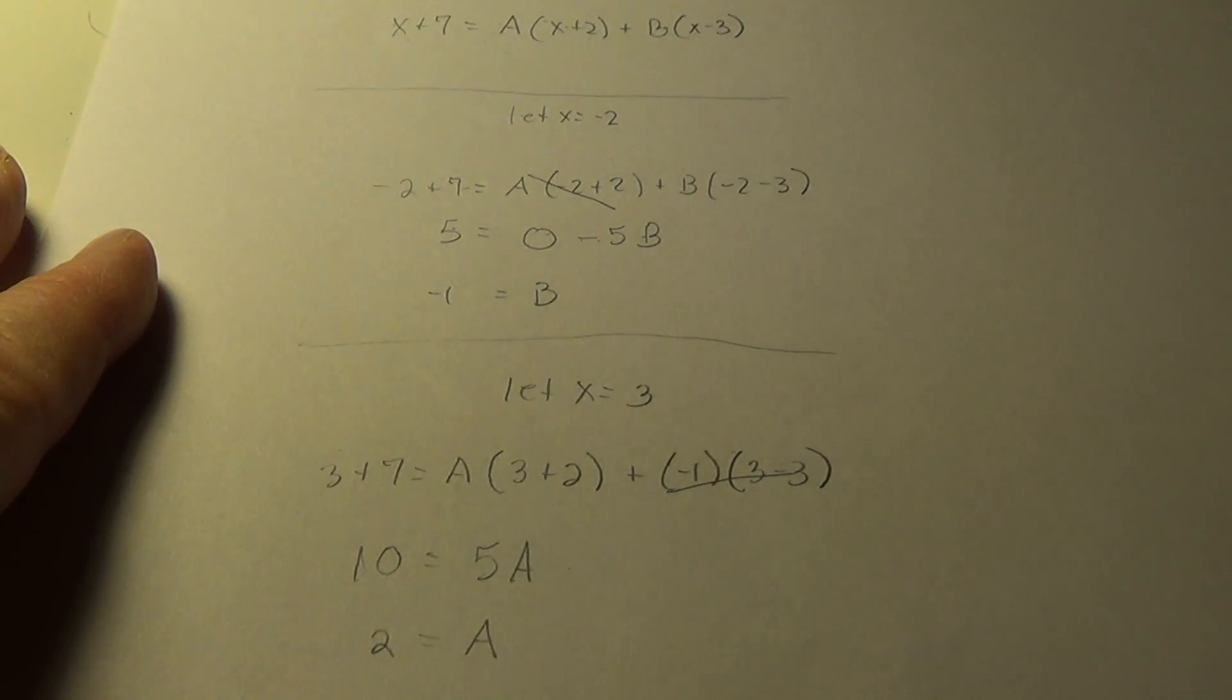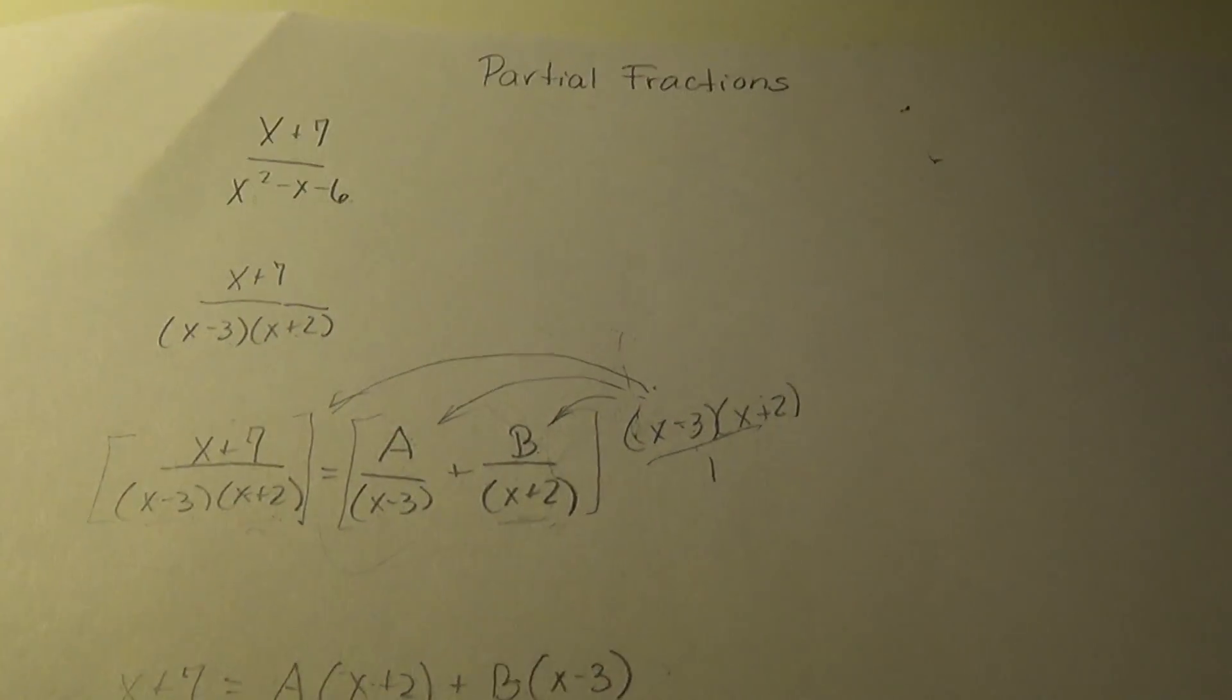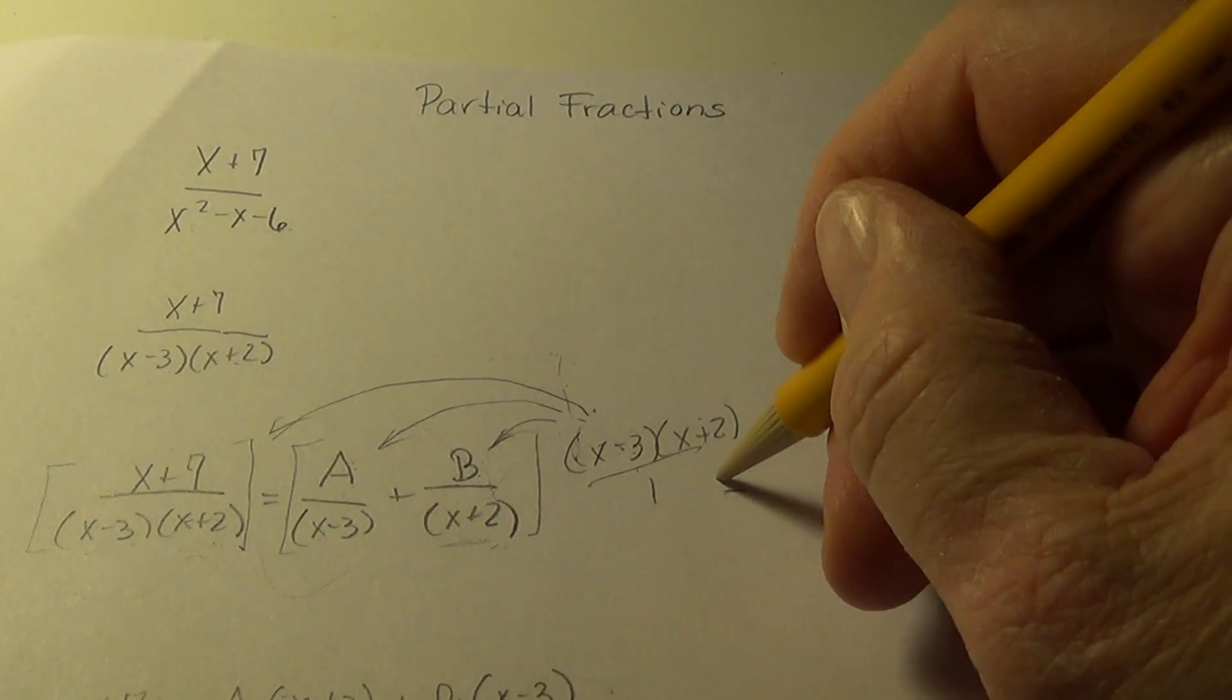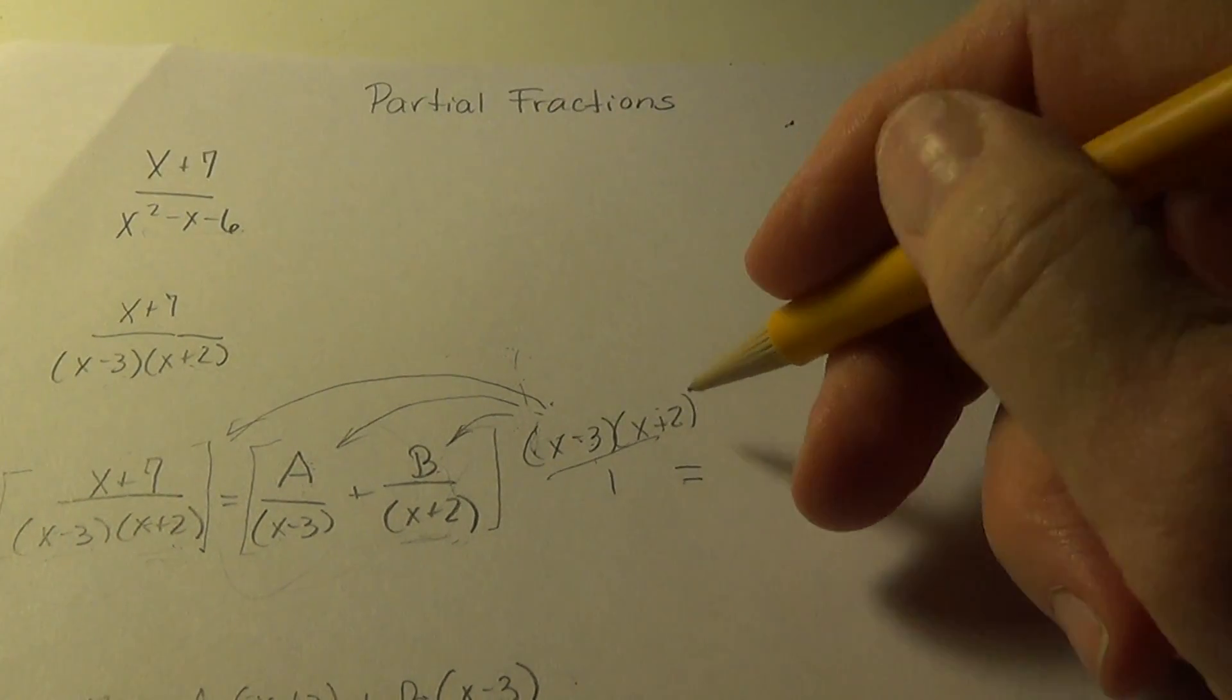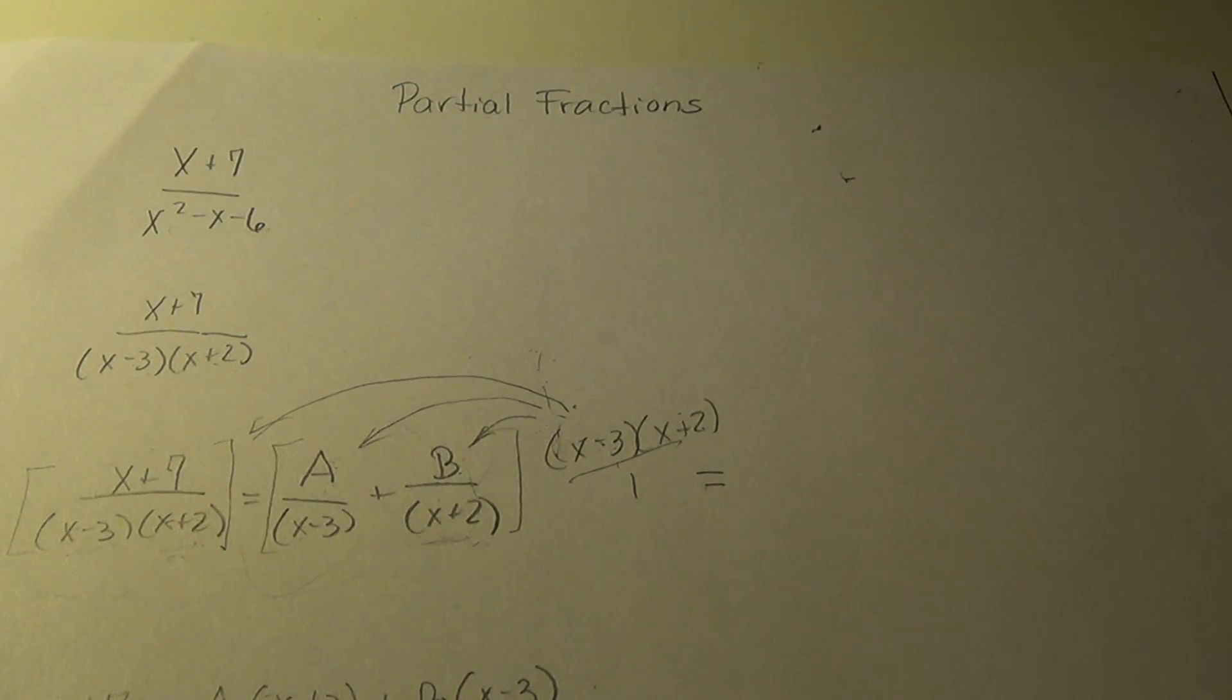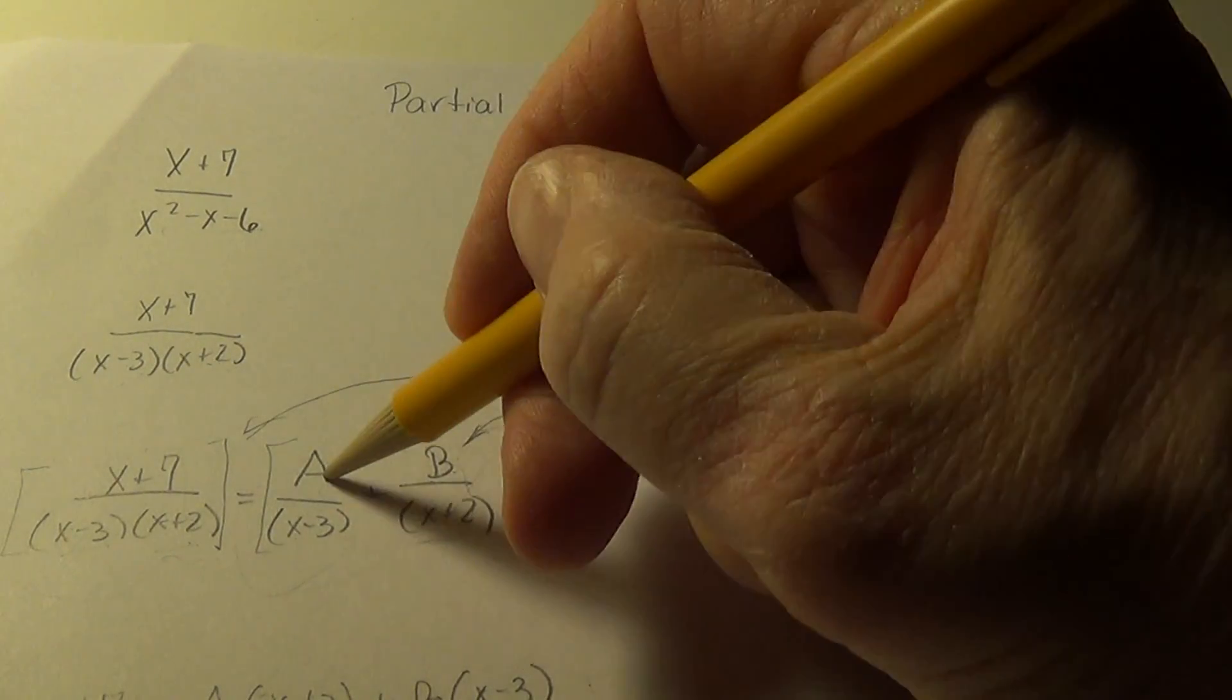So with a equals 2 and b equals minus 1, I go back to my original expression. And I write it as decomposed. I'm going to decompose with partial fractions. I'm going to tear it apart and make it look like this. Now I know that a was 2. So I'm putting in a 2 for a.